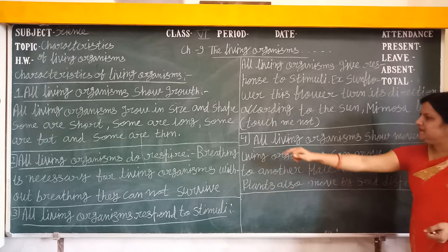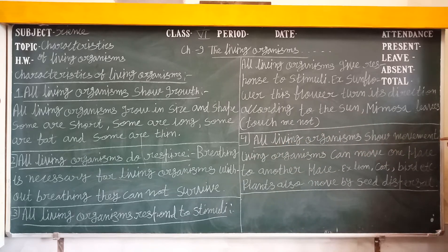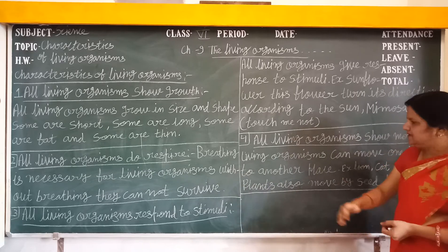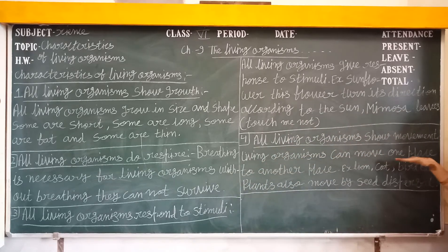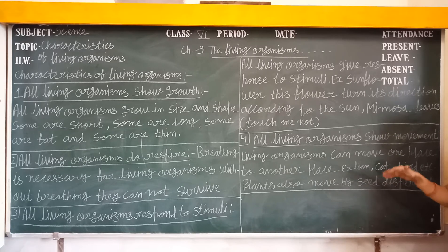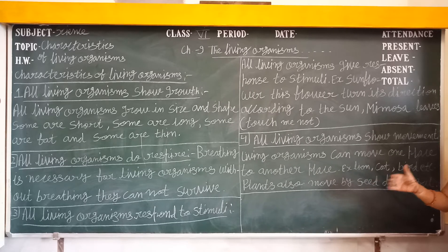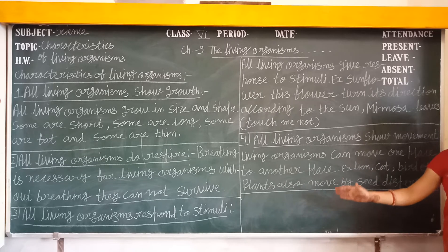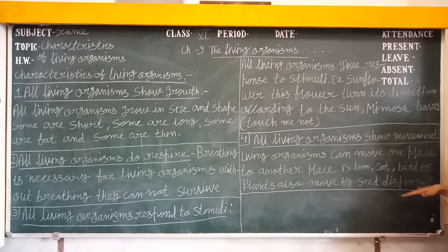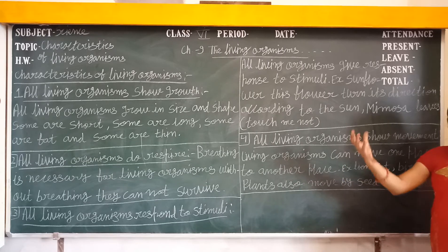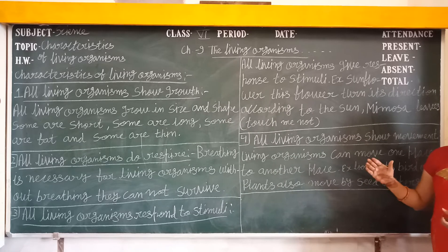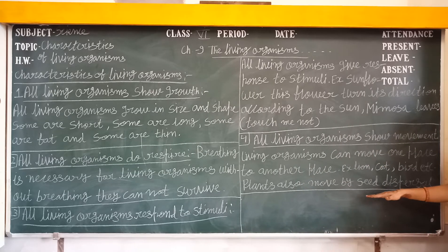Next, all living organisms show movement, meaning moving from one place to another — locomotion. For example, birds fly in the sky and lions move on land; they have legs for moving from place to place. Plants also show movement through seed dispersal. Seeds are spread by air, water, wind, and animals, and plants grow wherever seeds land.